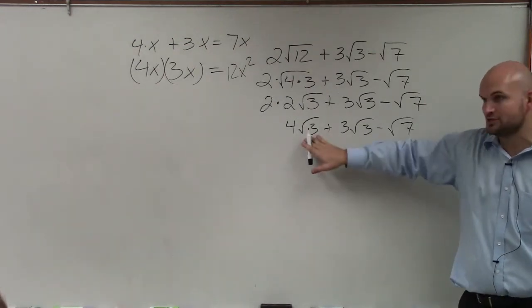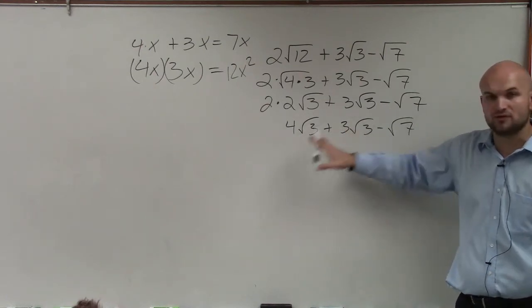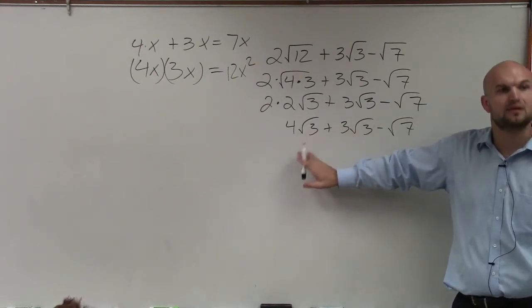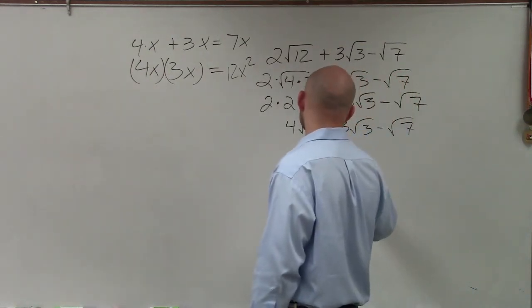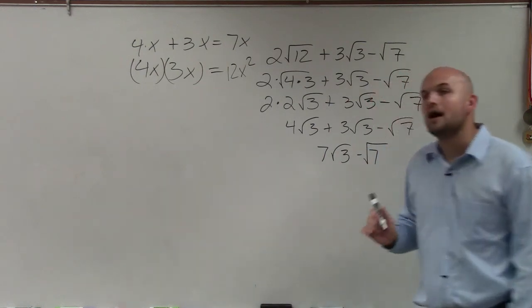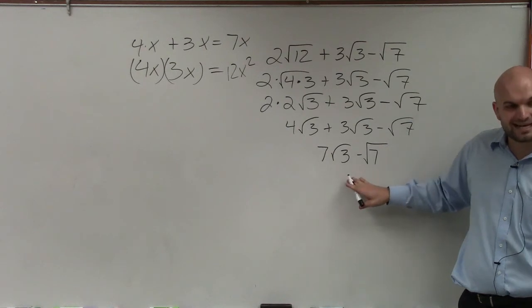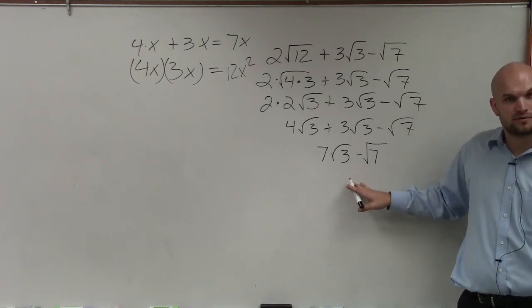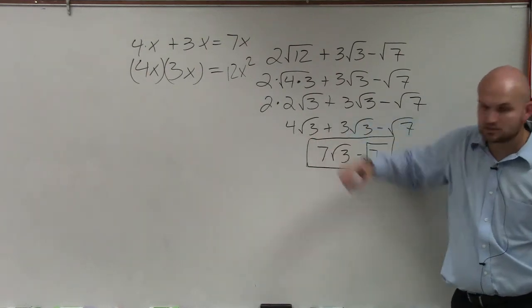These radicands, 3 and 3, are the same, we're taking the root of both of these numbers, of the same number, right? So therefore, I can combine them. So 4 plus 3 is 7 square root of 3 minus the square root of 7. However, the square root of 3 is not the same as the square root of 7, so I cannot subtract these. So therefore, my final answer looks like that.